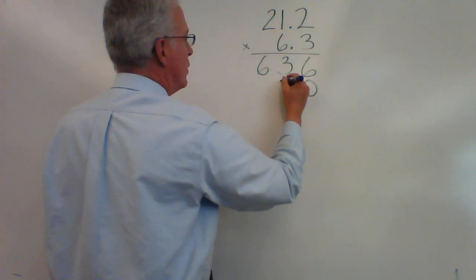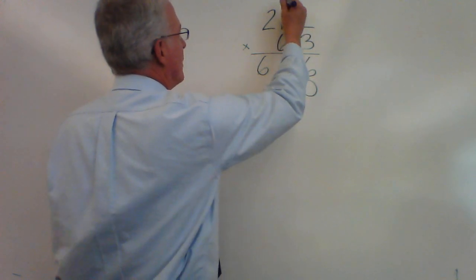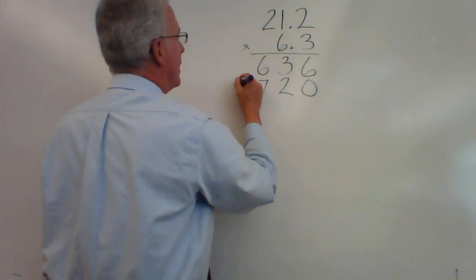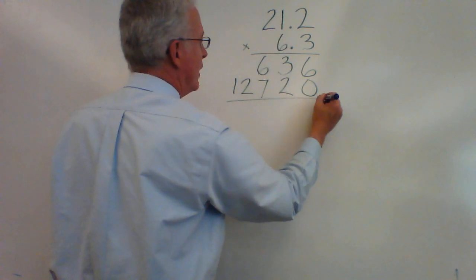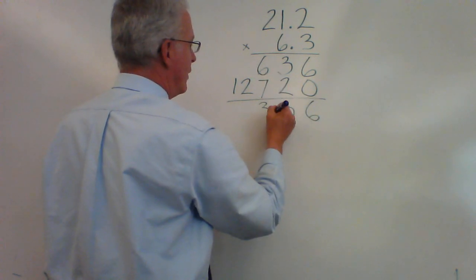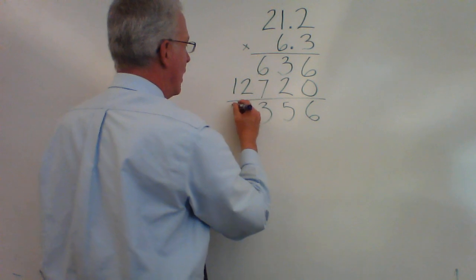6 times 2 is 12. 6 times 1 plus 1 is 7. 6 times 2 is 12. 6, 5, 13, 3, 1.